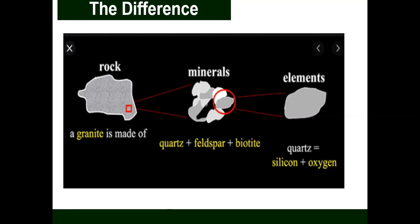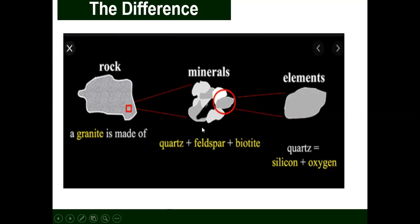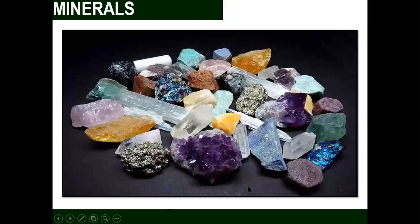In short, a rock cannot form without minerals, and minerals cannot form without elements. When elements combine or stand alone, they form minerals. When minerals combine, they form rocks. So chemically speaking, rocks and minerals are not the same because their compositions vary. For example, granite rock is made of three types of minerals: biotite, feldspar, and quartz. Each mineral is composed of different elements.